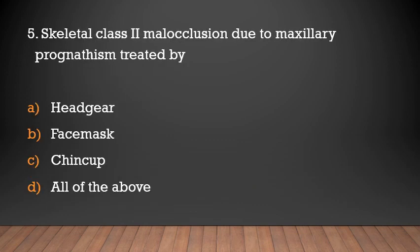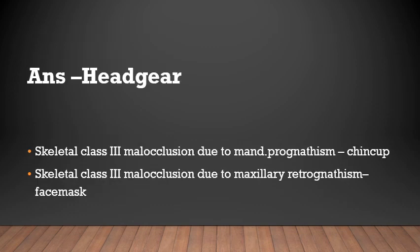Skeletal class 2 malocclusion due to maxillary prognathism is treated by: headgear, face mask, chin cup, or all of the above? Answer: Headgear. Skeletal class 2 malocclusion due to maxillary prognathism is treated by headgear. Skeletal class 3 malocclusion due to mandibular prognathism is treated by chin cup. Skeletal class 3 malocclusion due to maxillary hypoplasia is treated by face mask.